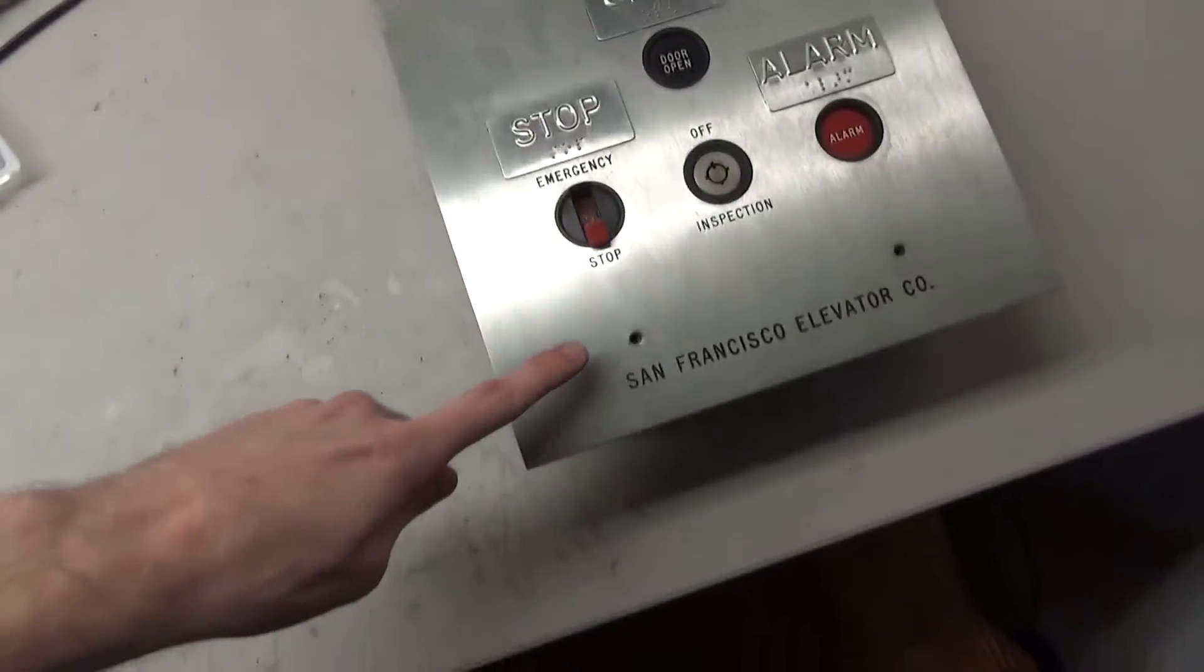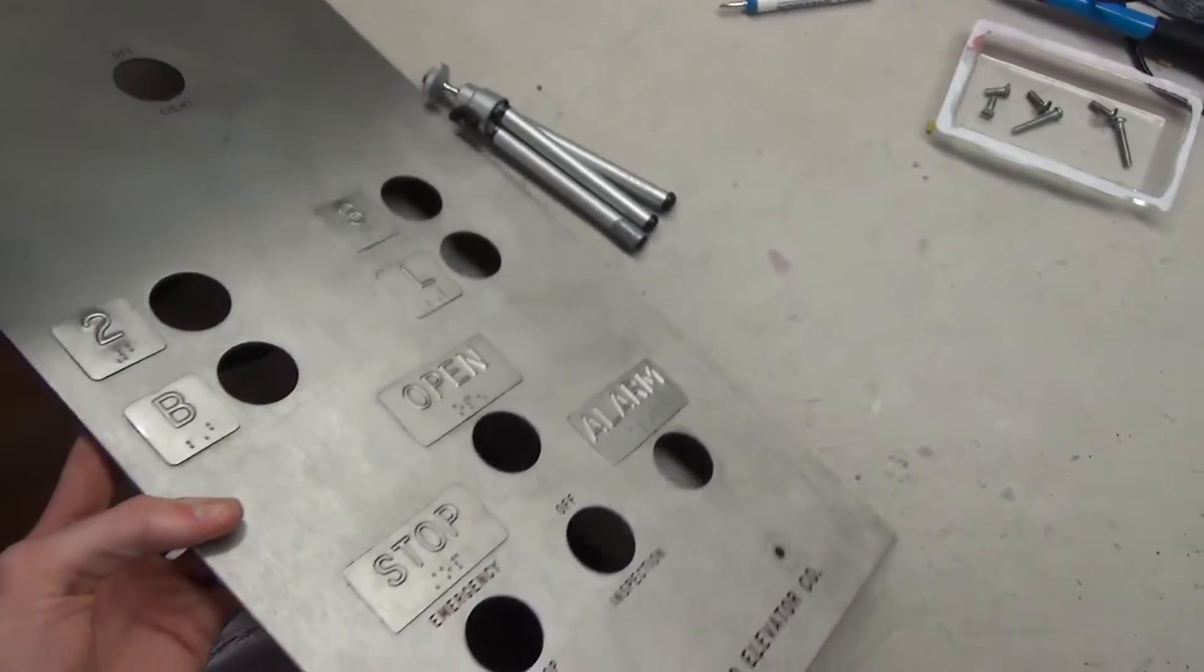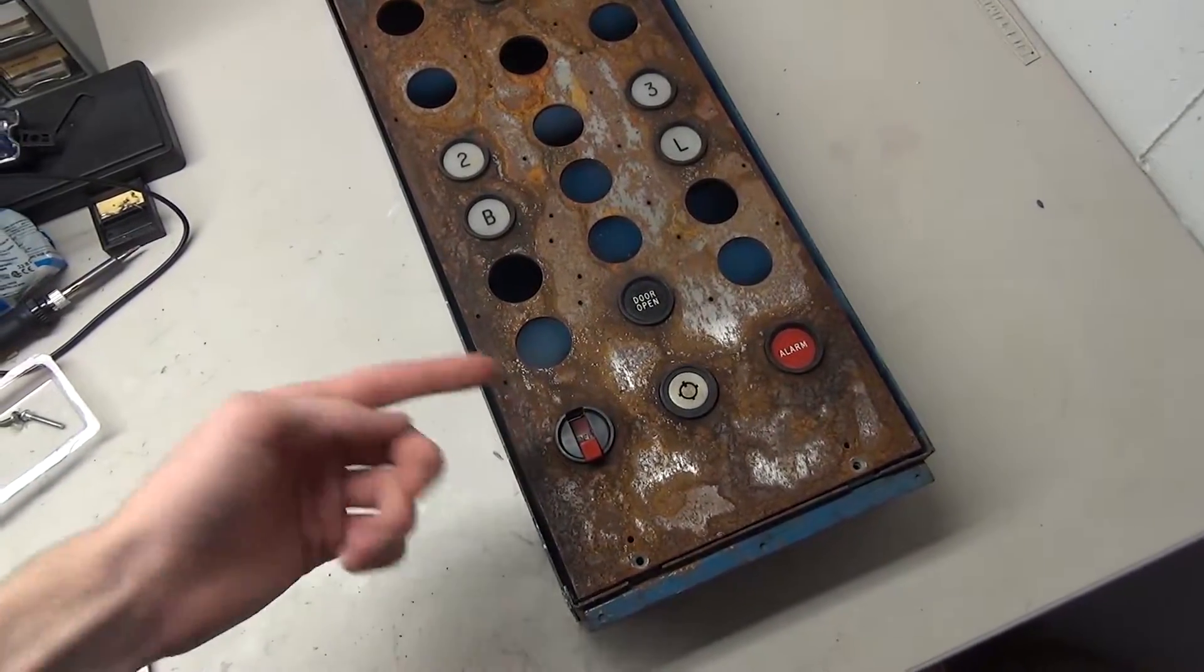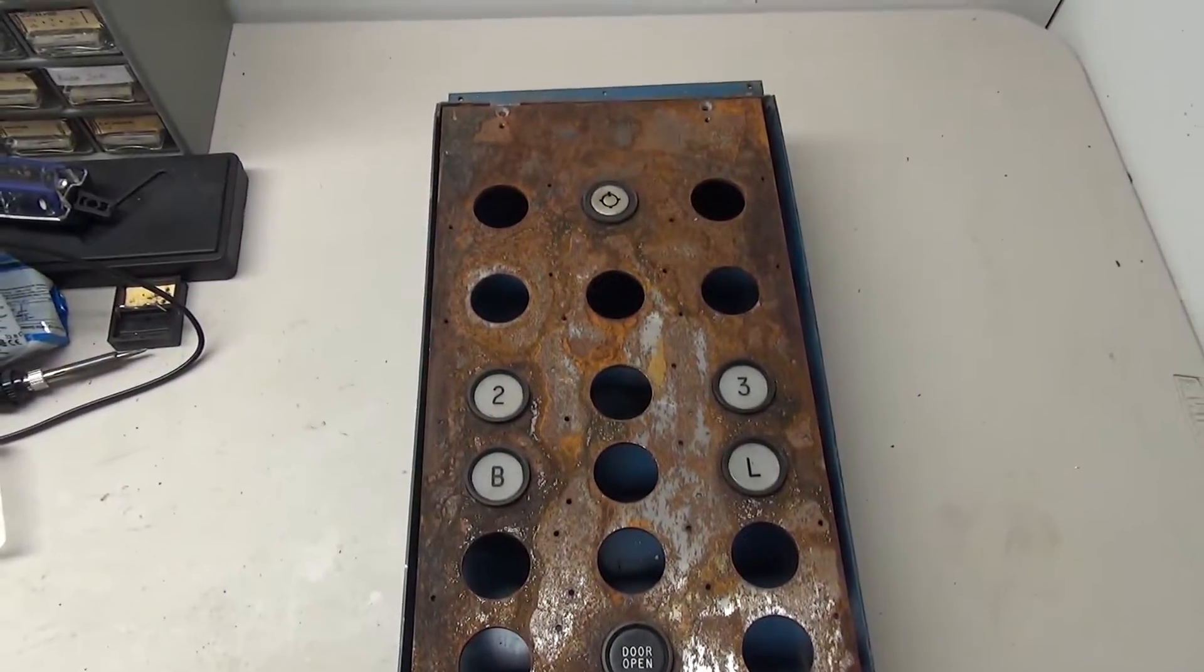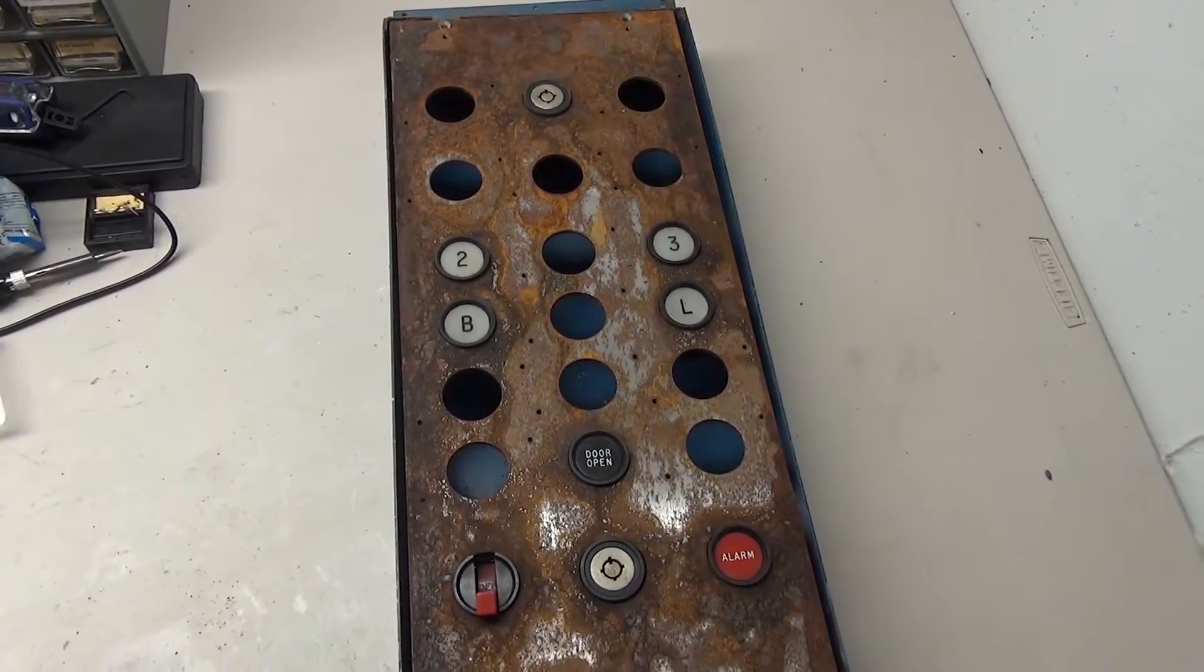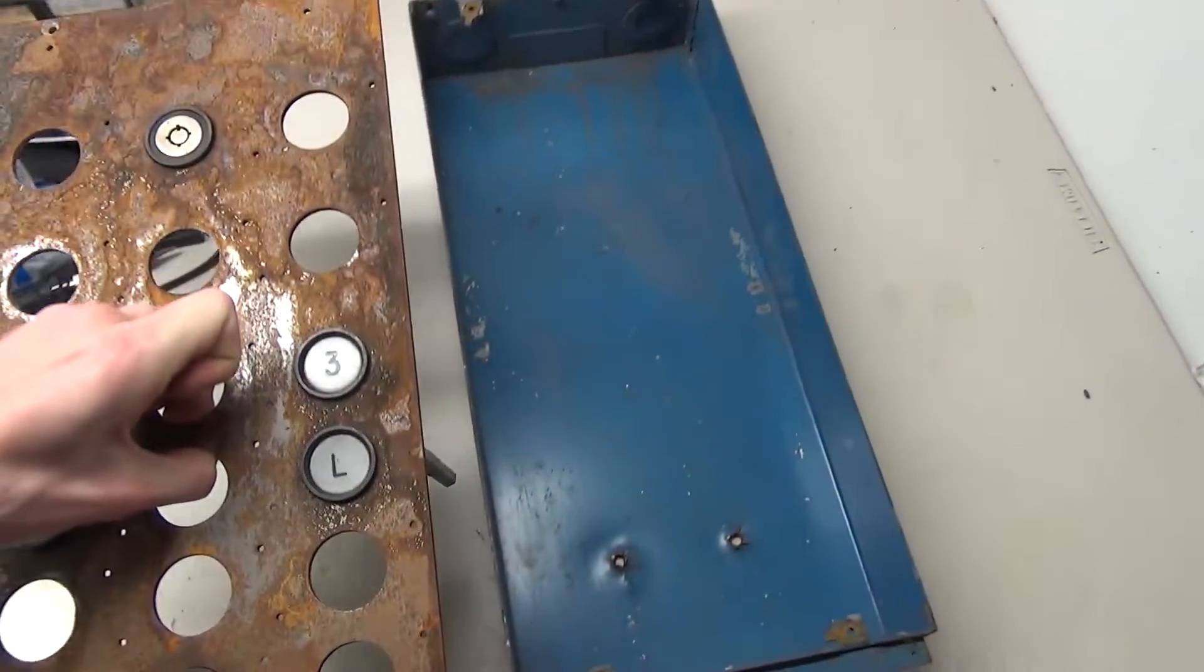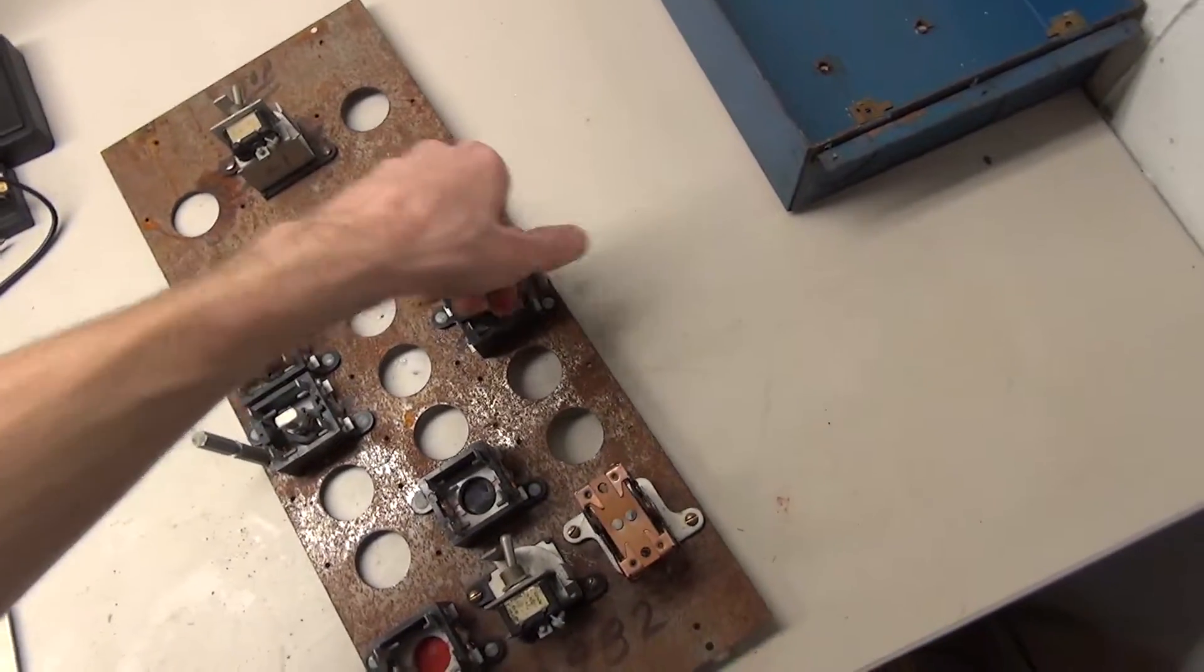After you remove the four screws on the top you can pull off the plate. Underneath we have a very rusty piece - this is very old rust, not new rust, so we're thinking we should be okay with leaving it. You can see there's spots for a whole bunch of other things if you wanted to add other buttons. There were some more screws on the corners, and once you take those off this piece comes out.